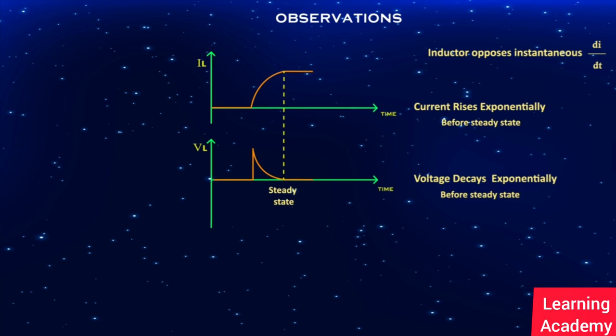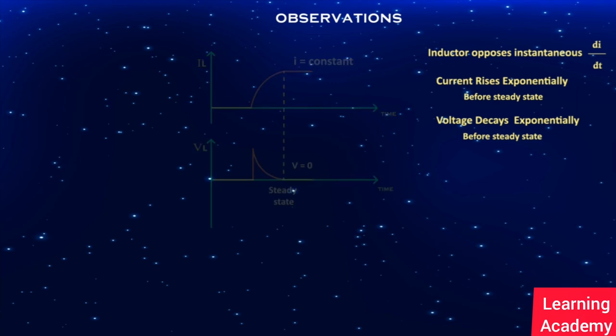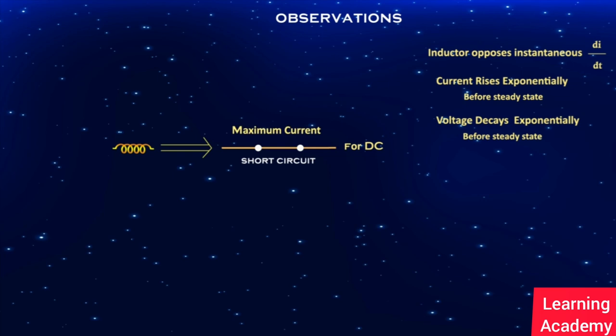After reaching steady state, the current will be constant and voltage becomes zero. So the inductor acts as a short circuit for direct current, which in turn allows maximum current to pass. That is, the inductor offers zero resistance after steady state.